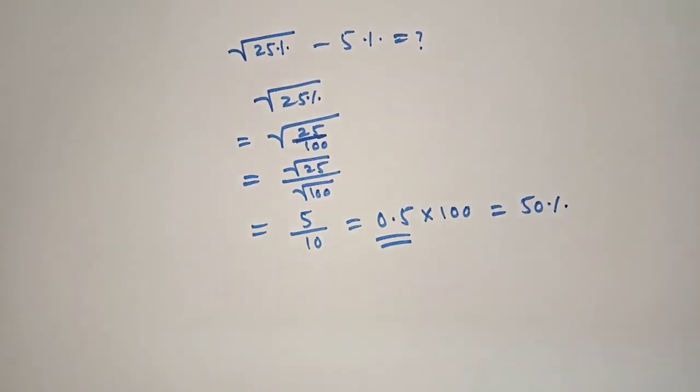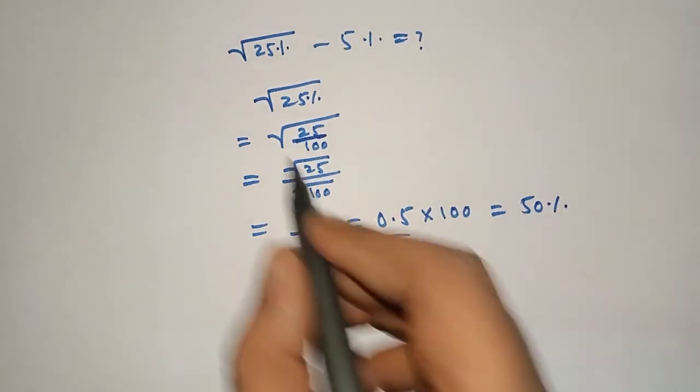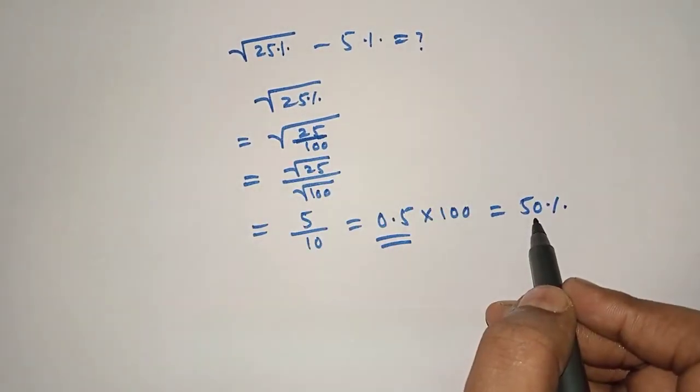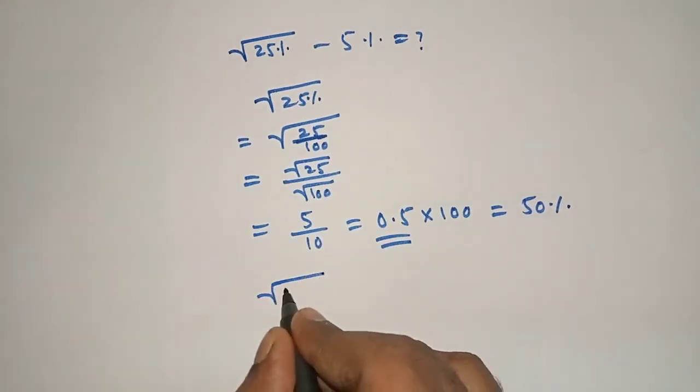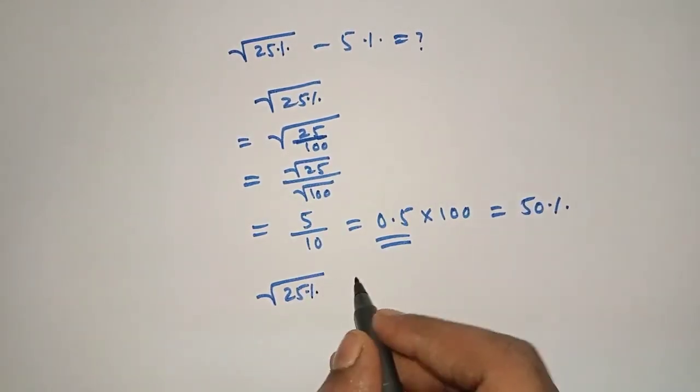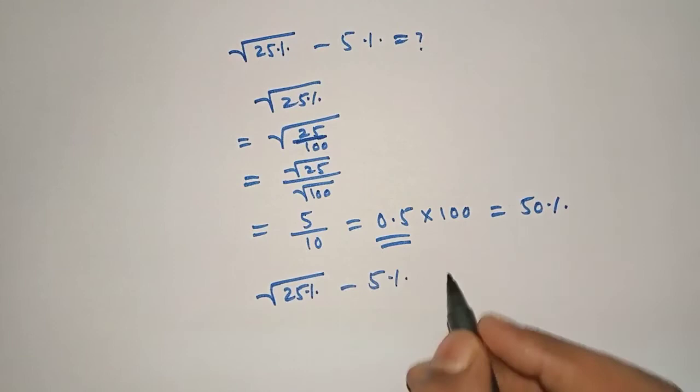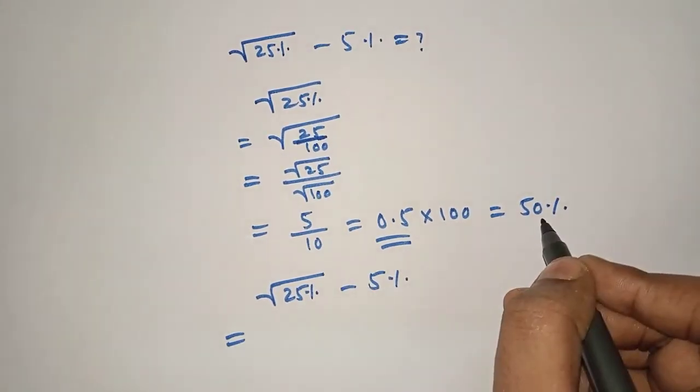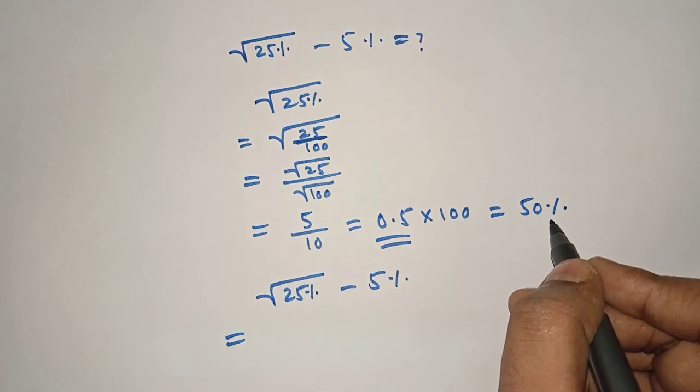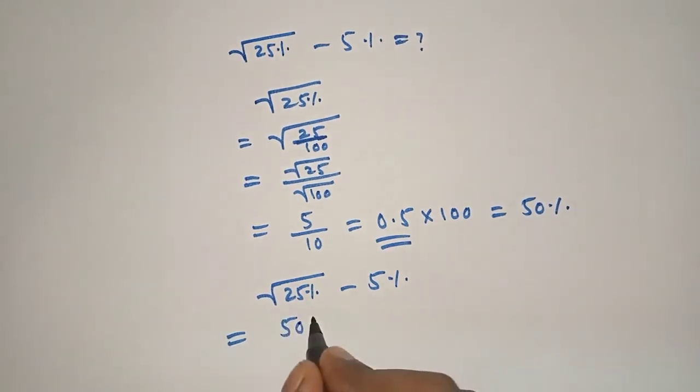Now this term has been solved. Now we will solve the full term: under root 25% minus 5%. So under root of 25% is 50%, we have just solved. 50% minus 5%, both are percent, then 50 minus 5 is 45%.